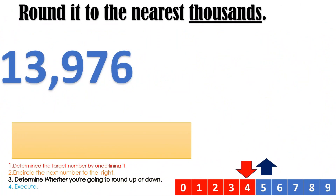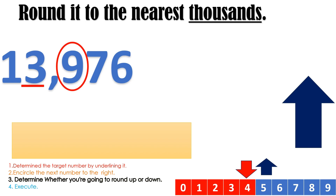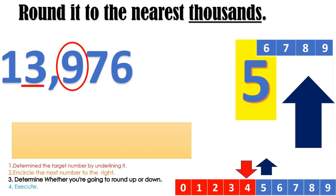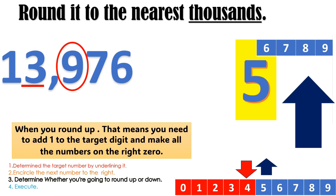Nearest thousands. What is the target number? What is the rounding number? Correct — it's number 9. Based on our rounding number which is 9, are we going to round up or round down? Yes, we are going to round up since 9 is above 5. When you round up, that means you need to add 1 to the target digit and make all the numbers on its right 0. So what is your final answer? 14,000.